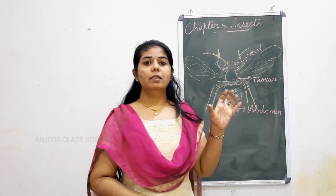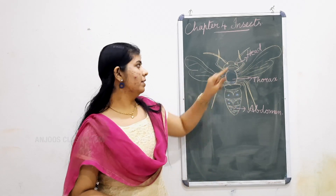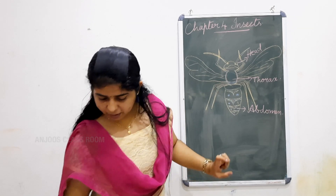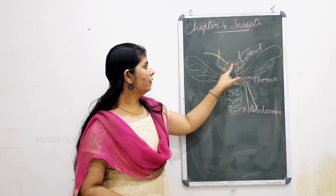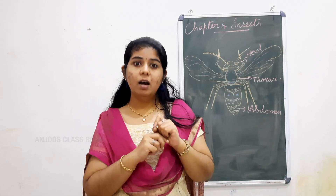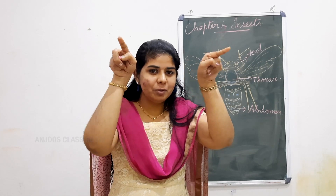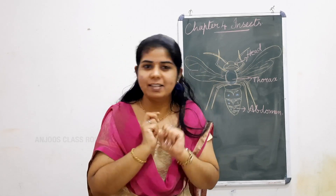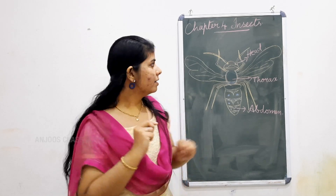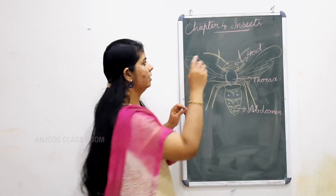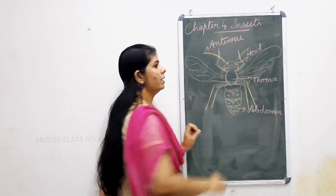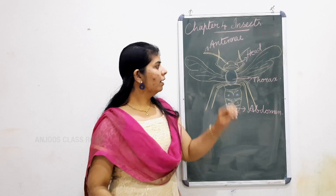So the insect's body is divided into three main parts: the first one is the head, then the thorax, and the abdomen. On the head you can see the eyes. The insects also feel changes around them — they have two parts called the antennae, attached to the head, which help them to feel the changes around them. Antennae — A-N-T-E-N-N-A-E.